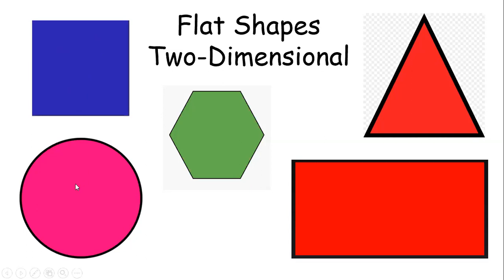This is a square. Good. This is a circle. This is a hexagon. This is a triangle. And this is a rectangle.